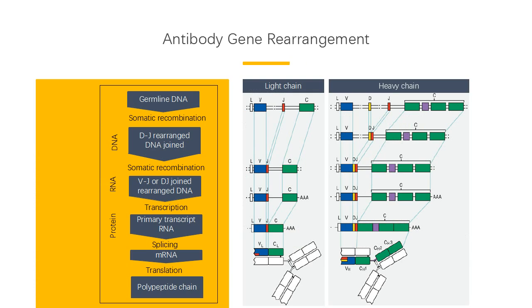The following antigen-independent steps in B cell development occur in the bone marrow. In the stem cell, heavy chain IgH and kappa and lambda light chain IgK and IgL genes are in germline configuration. In the early pro-B cell, IgH undergoes DJ gene rearrangement with loss of DNA between the joined D and J segments. In the late pro-B cell, IgH undergoes VDJ rearrangement with loss of DNA between the joined V and D segments.